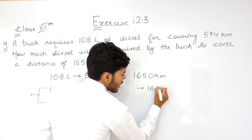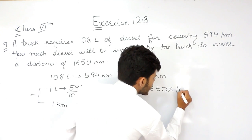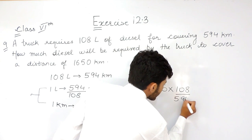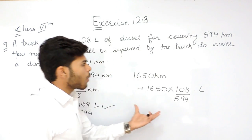the truck will need 1650 multiplied with 108 upon 594. This is the amount of diesel that will be required by the truck to cover a distance of 1650 km.